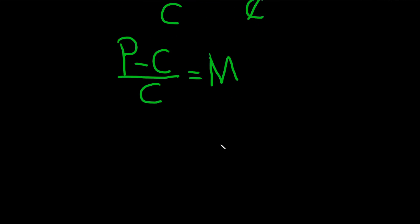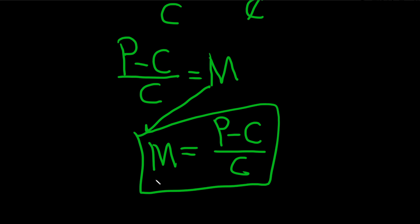And we're pretty much done. Maybe we should write the M on the left-hand side. So like this, M equals P minus C over C. And that would be the final answer. I hope this video has been helpful.